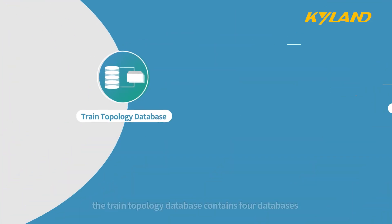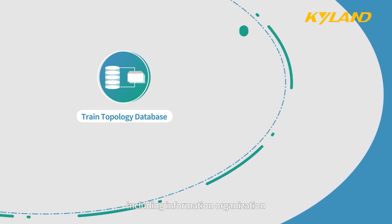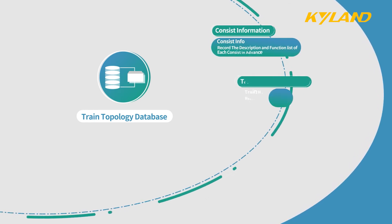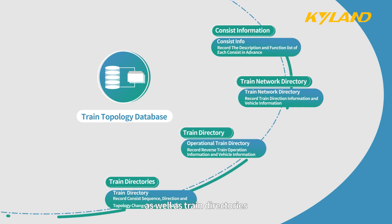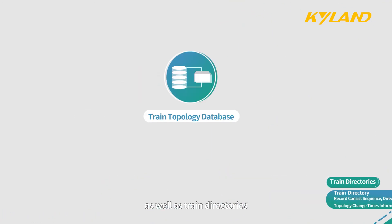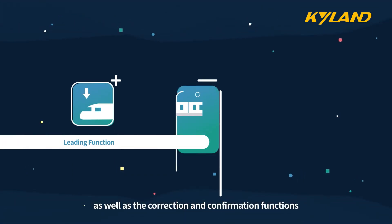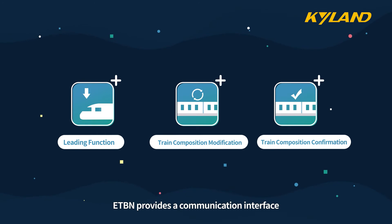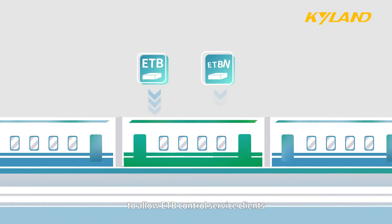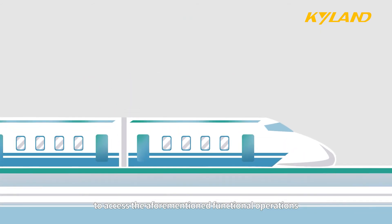Among them, the Train Topology Database contains four databases including information organization, train network directories, operational train directories, and train directories. ETBN Control Service is used to achieve the leading function as well as the correction and confirmation functions. ETBN provides a communication interface to allow ETBN Control Service clients to access the aforementioned functional operations.